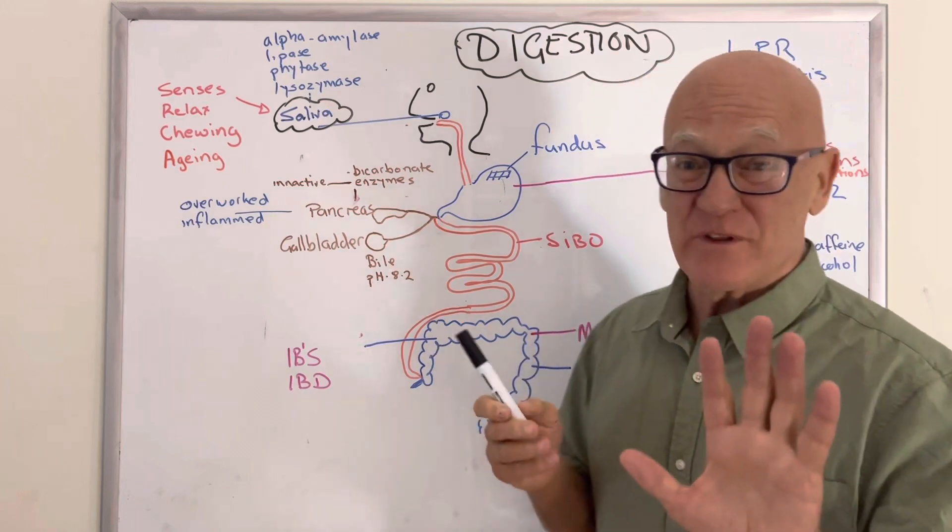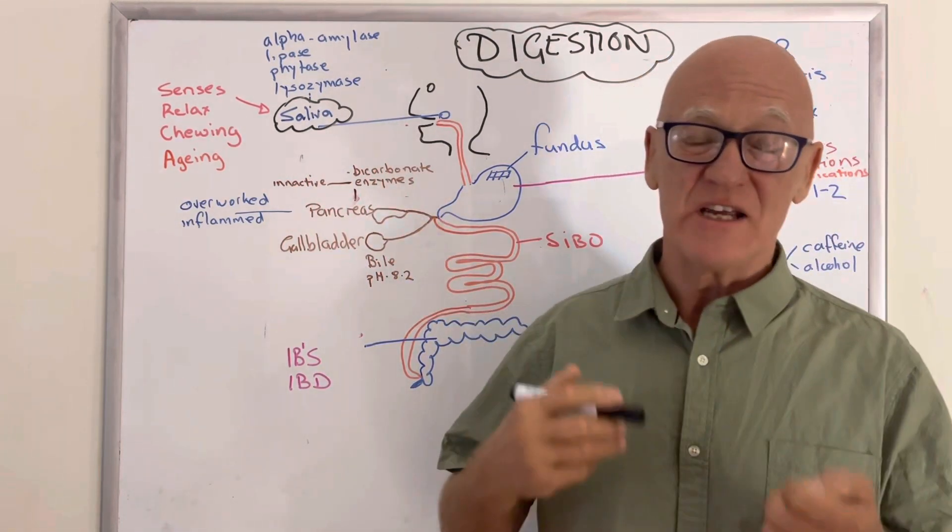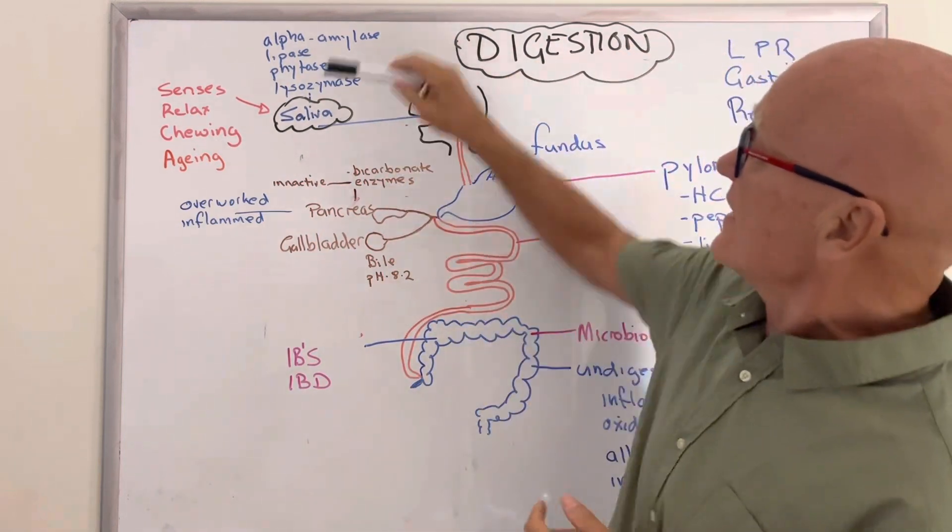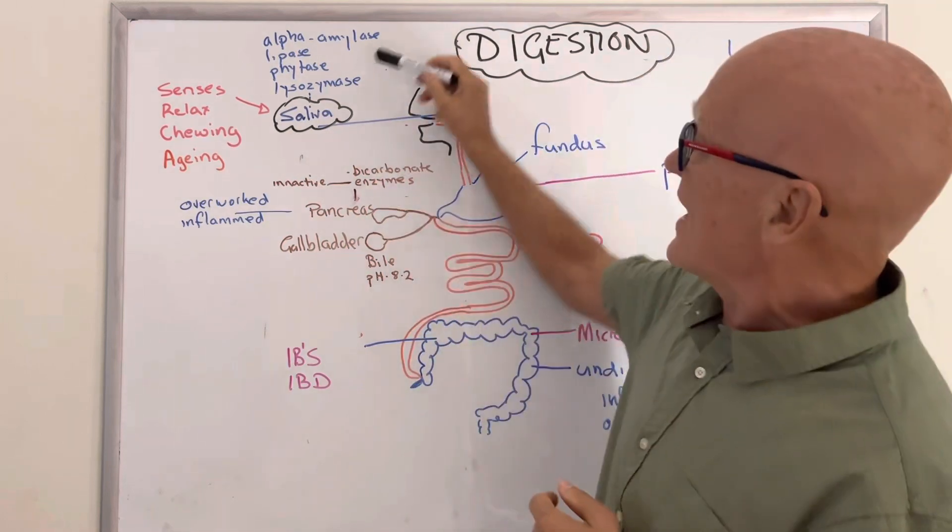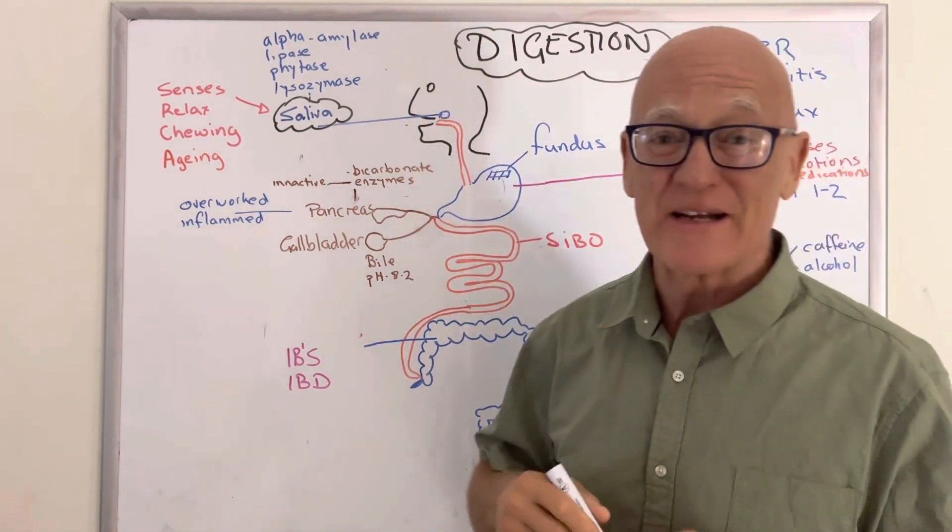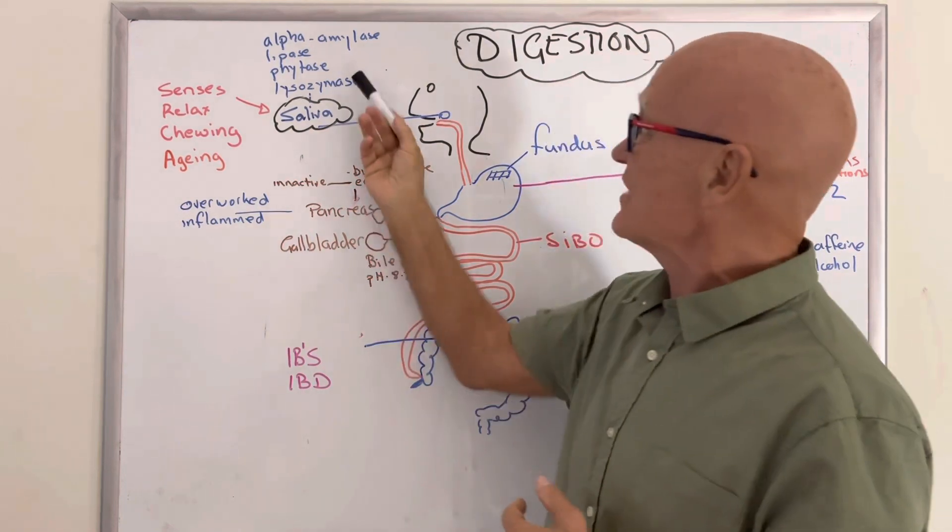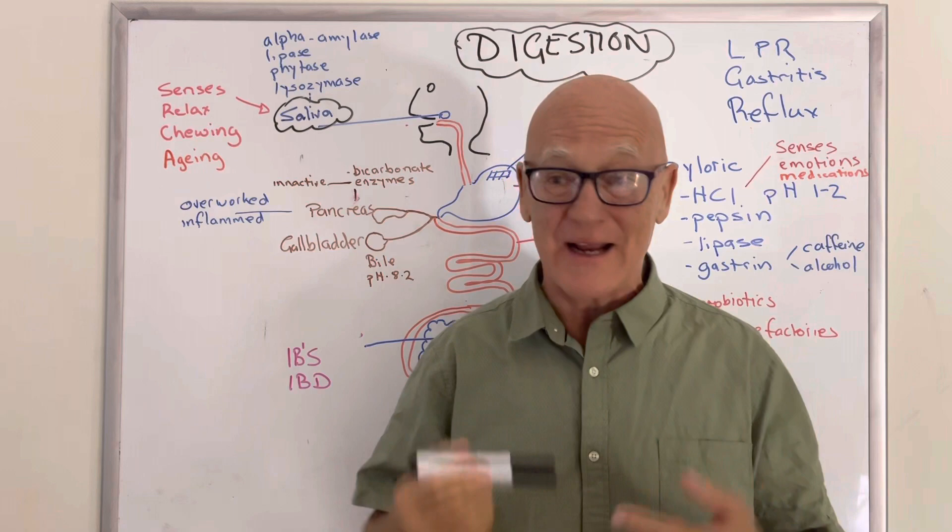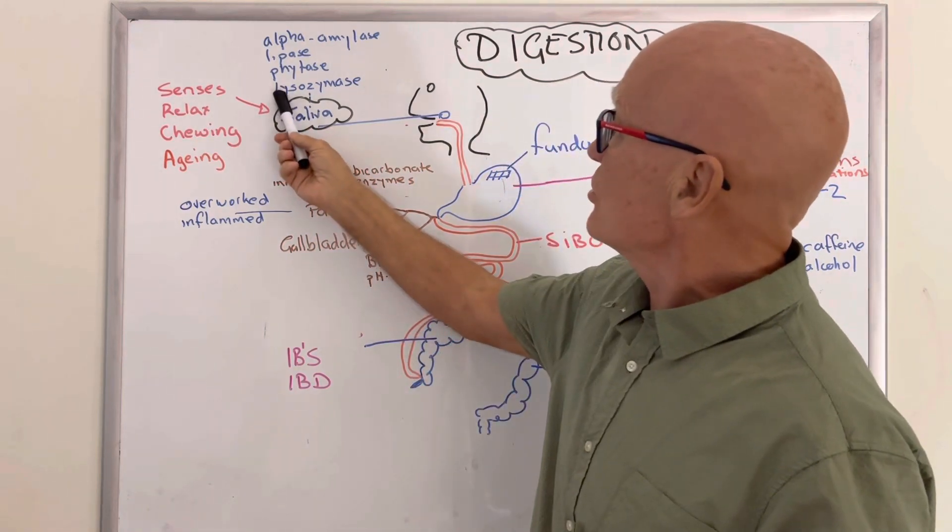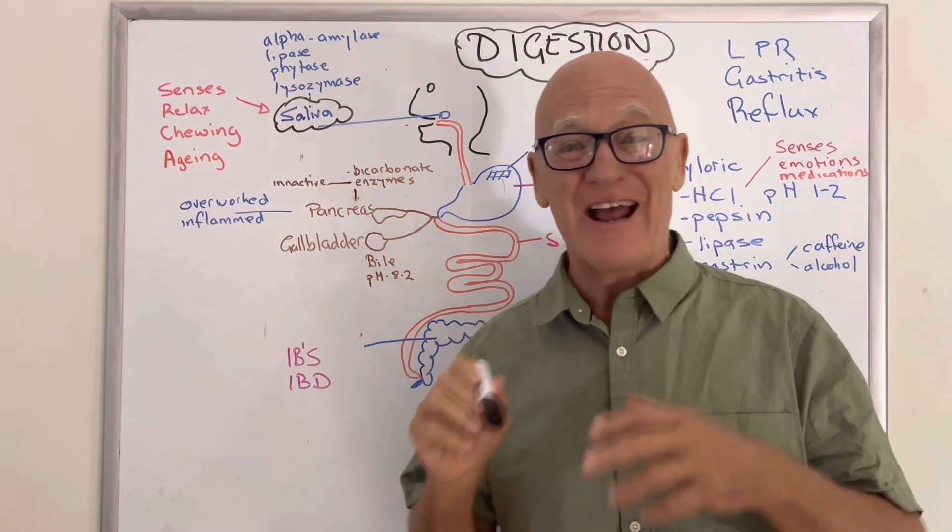Let's start here with the digestive process, and it begins with saliva. Your saliva isn't just a liquid in the mouth, it's lubricating, so it gets it all liquidy and breaks it all down. It's got amylase to start bringing down the carbohydrates, lipase which starts to break down some of the fats, phytase starts to break down phytic acid that you get in grains. And it's got another thing called lysosome, which isn't a digestive enzyme but it's antibacterial.